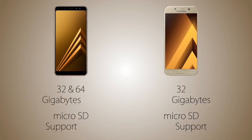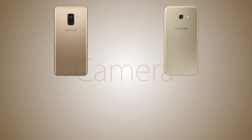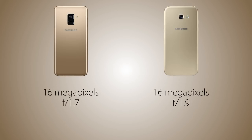As for the camera, it's going to be 16 megapixels on both handsets, with a larger aperture of f/1.7 on the A8 vs f/1.9 on the A5, meaning brighter images on the A8 2018. The A8 2018 uses phase detection autofocus, meaning faster focusing speed compared to the A5 2017.